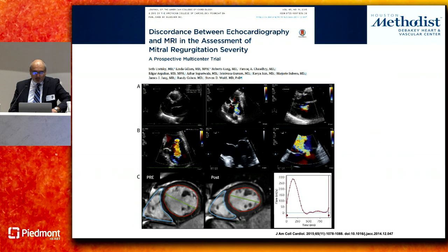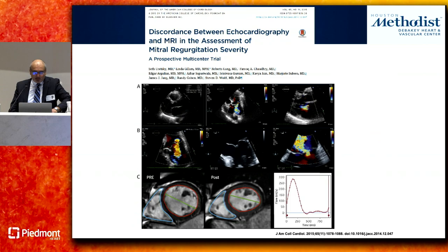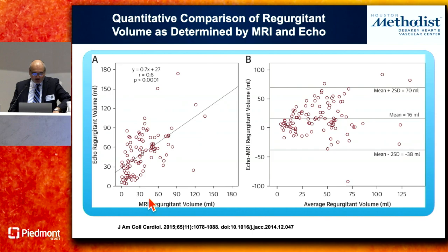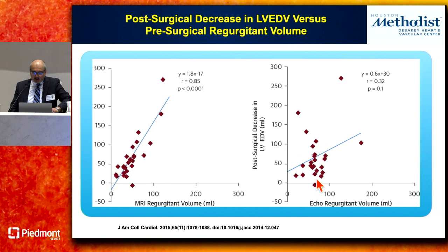How does CMR compare to echo for severity assessment? A study compared CMR to transthoracic echo, using reverse remodeling after mitral valve correction as the reference standard. At baseline there was modest correlation between the two techniques with an R value of about 0.6, with some variability. Both echo grading and MRI showed a relationship with magnitude of reverse remodeling, but MRI gave a tighter relationship with reverse remodeling after mitral valve correction.